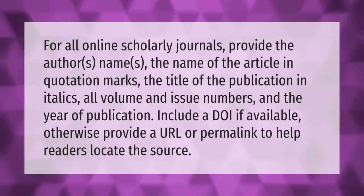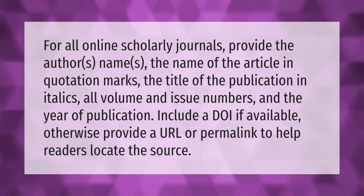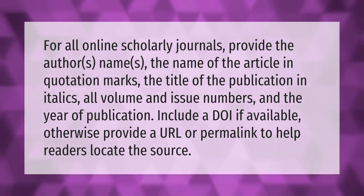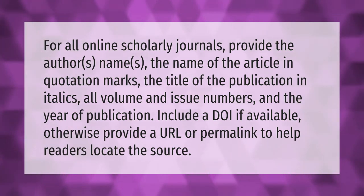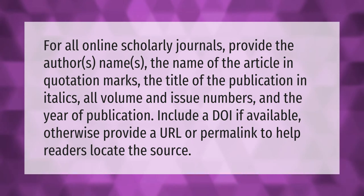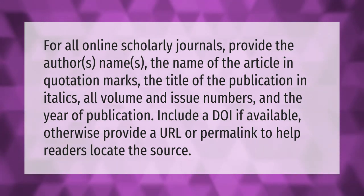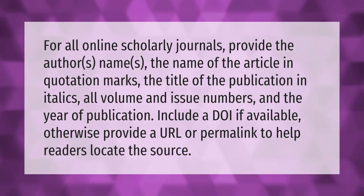For all online scholarly journals, provide the author's name, the name of the article in quotation marks, the title of the publication in italics, all volume and issue numbers, and the year of publication. Include a DOI if available; otherwise provide a URL or permalink to help readers locate the source.